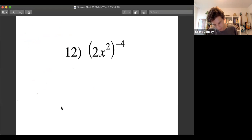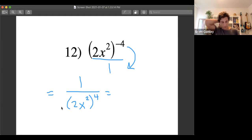That was just a little aside before we get to this actual problem. So all of this technically is over one. So let's flip it. Let's put this whole thing, everything to the negative fourth power, let's put it on the bottom. So two x squared to the fourth, positive fourth, one on top.